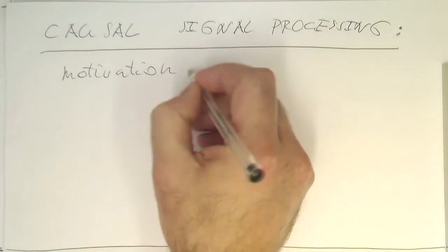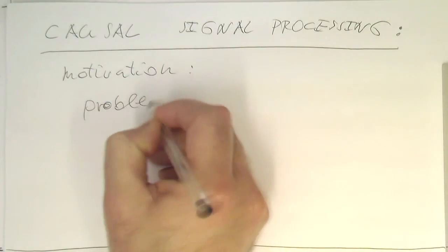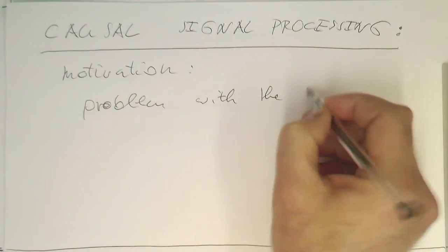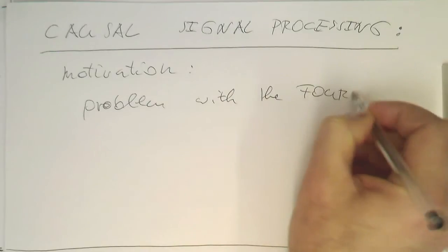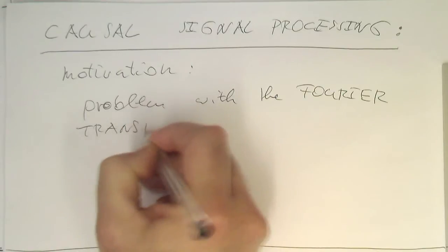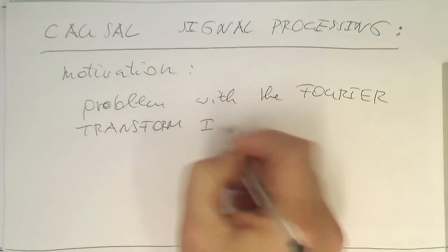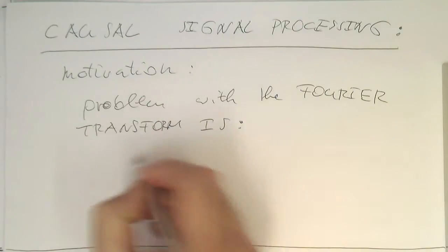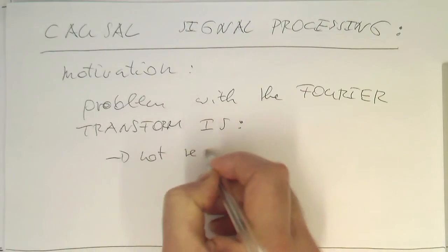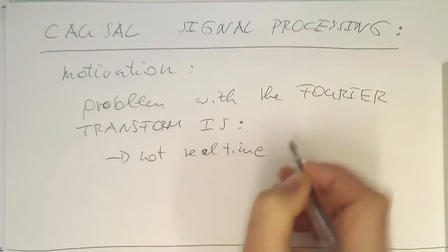Now our motivation is the problem with the Fourier transform. The problem with the Fourier transform is that it is not real time.